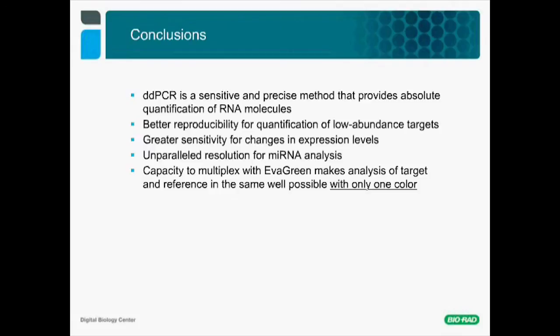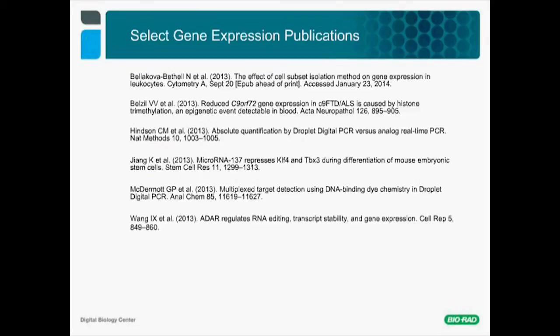To conclude, ddPCR is a sensitive and precise method that provides absolute quantification for RNA molecules. It affords much better reproducibility for quantification of low-abundance targets, which is extremely useful when working with limited sample or single cells. It also gives greater sensitivity for lower-level changes in expression. It provides parallel resolution for miRNA analysis, and the capacity to multiplex with EvaGreen makes analysis of target and reference in the same well possible using just one color. I have included a series of papers that were mentioned here; you will be able to retrieve those using your regular browsing tools. Thank you very much for listening.